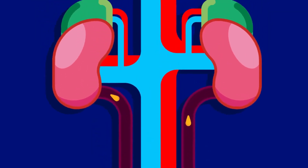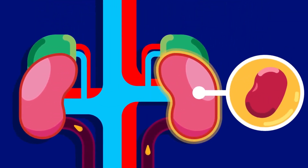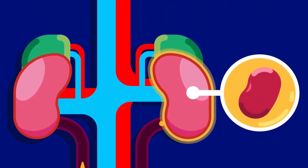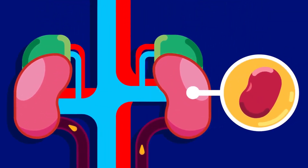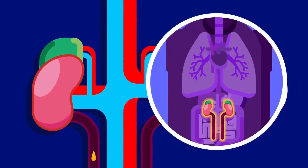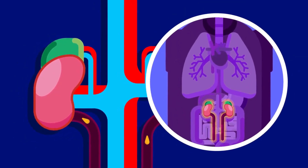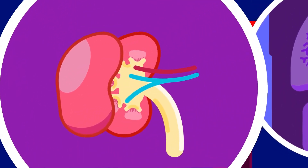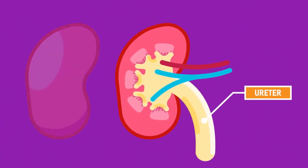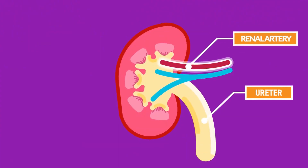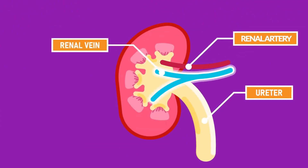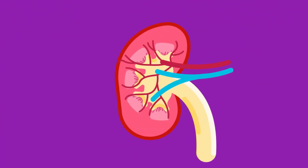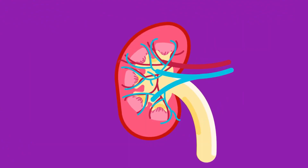Kidney. There are two kidneys. Both are reddish brown and bean shaped. Kidneys are located towards the back of the abdominal cavity. Attached to the kidney are the ureter, renal artery, and renal vein. The artery supplies the kidney with blood and the vein carries it out.